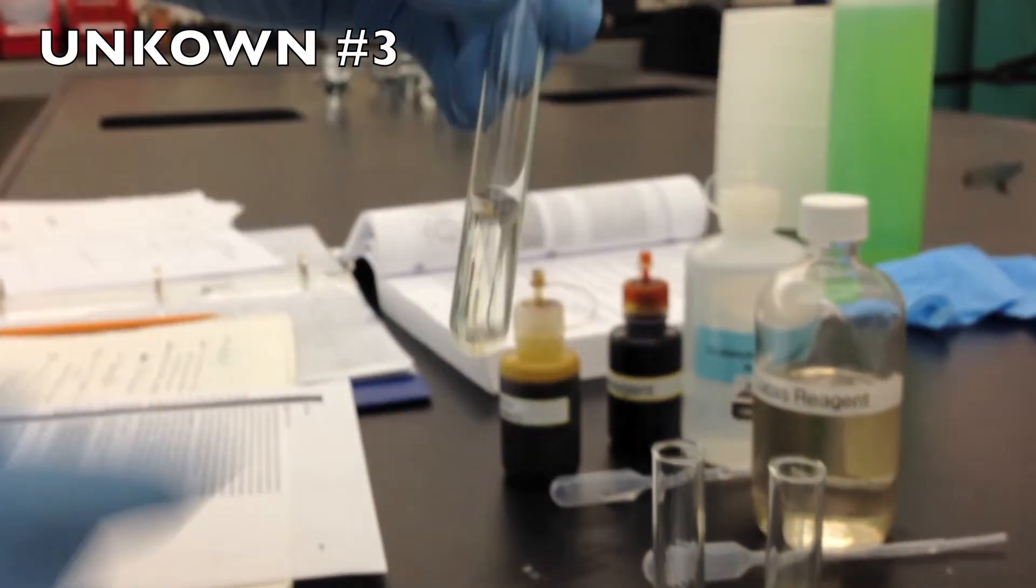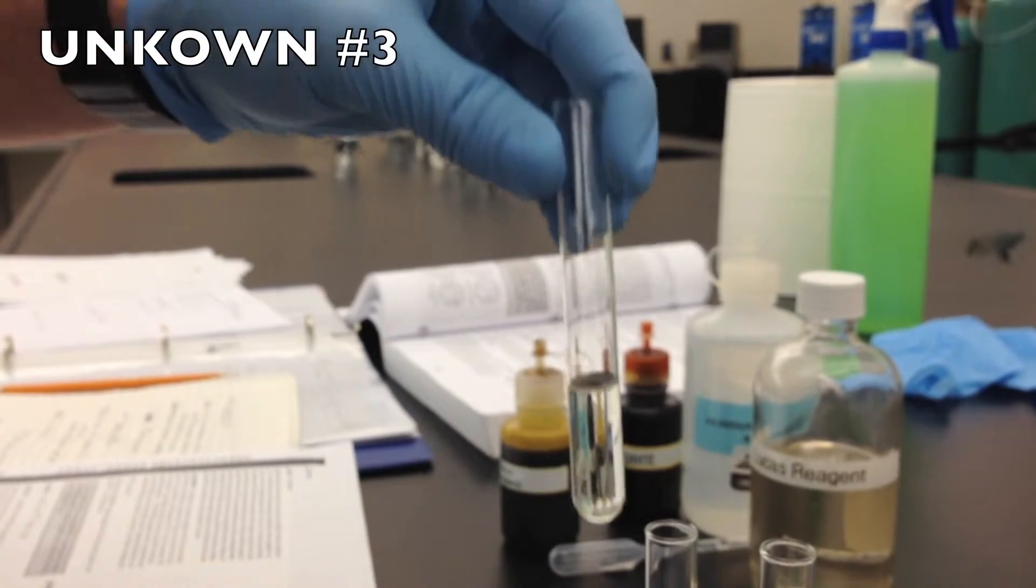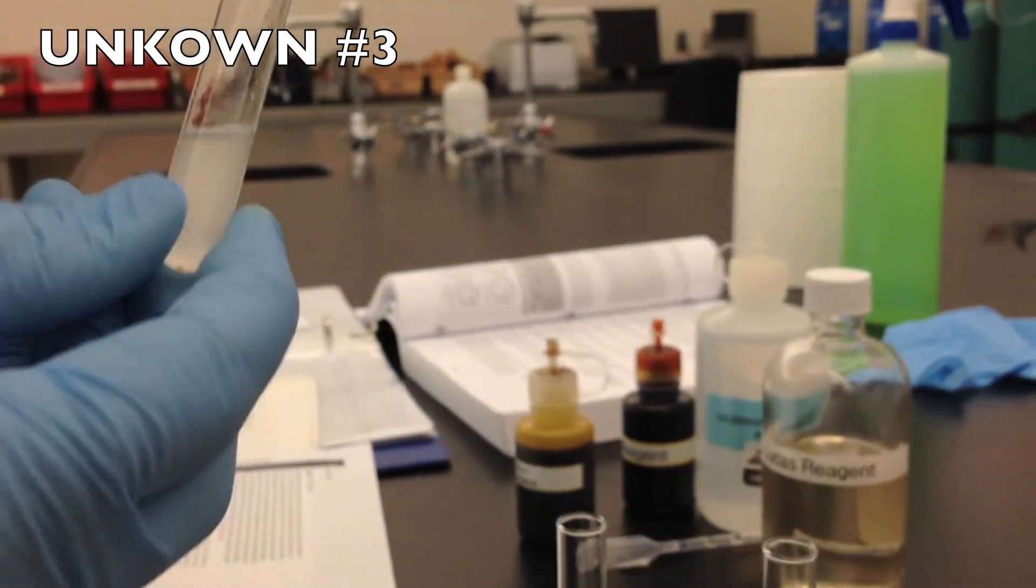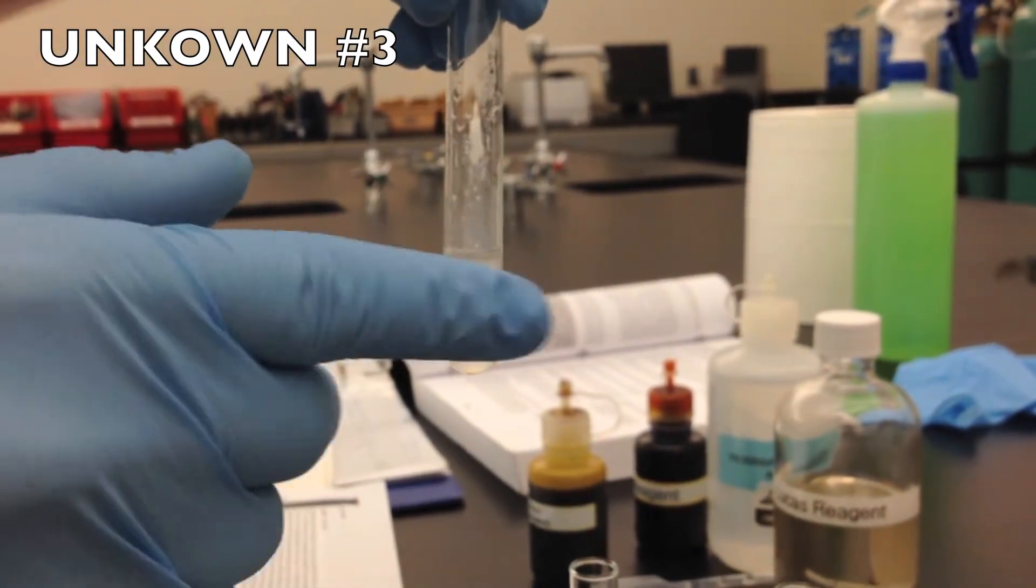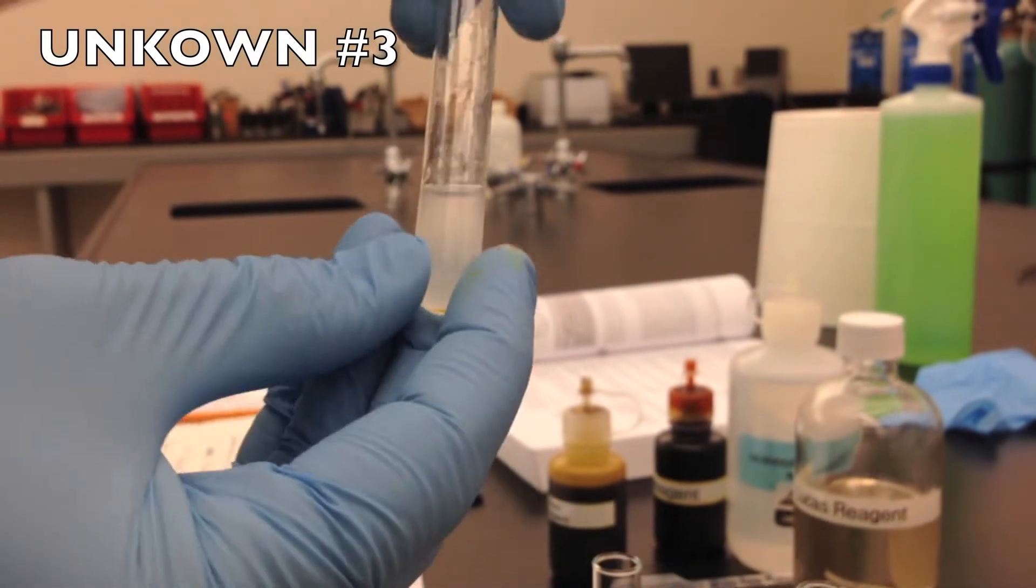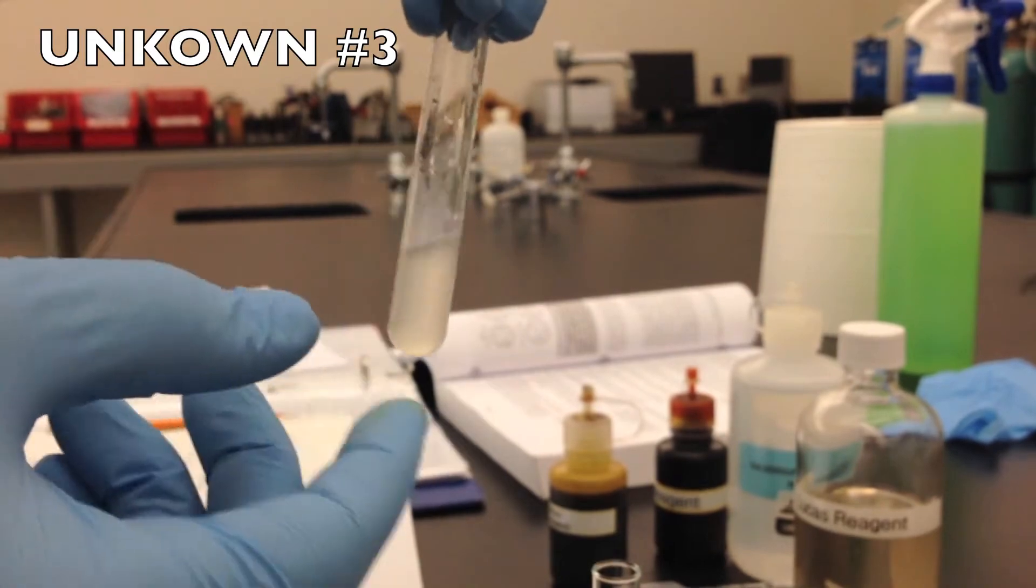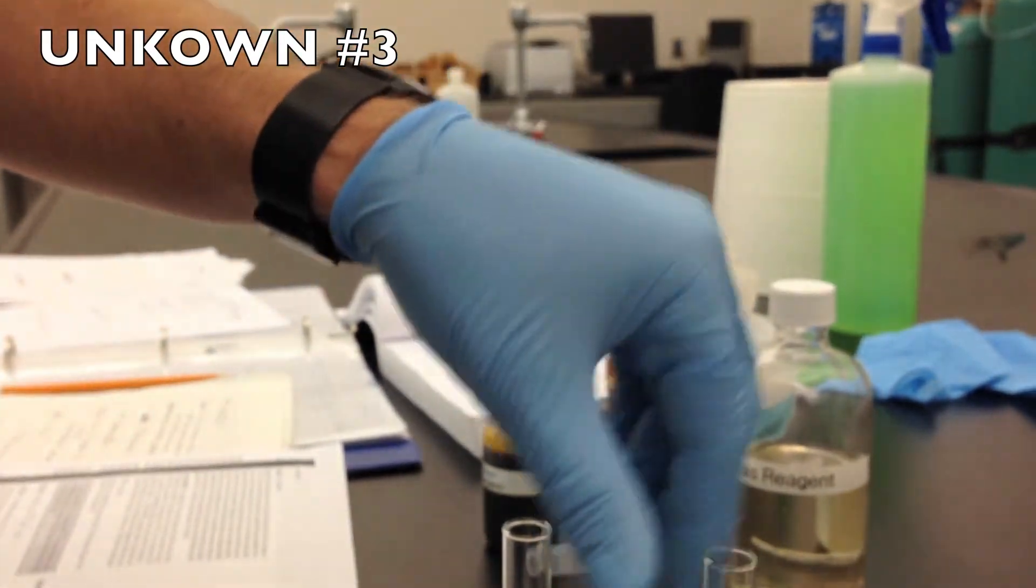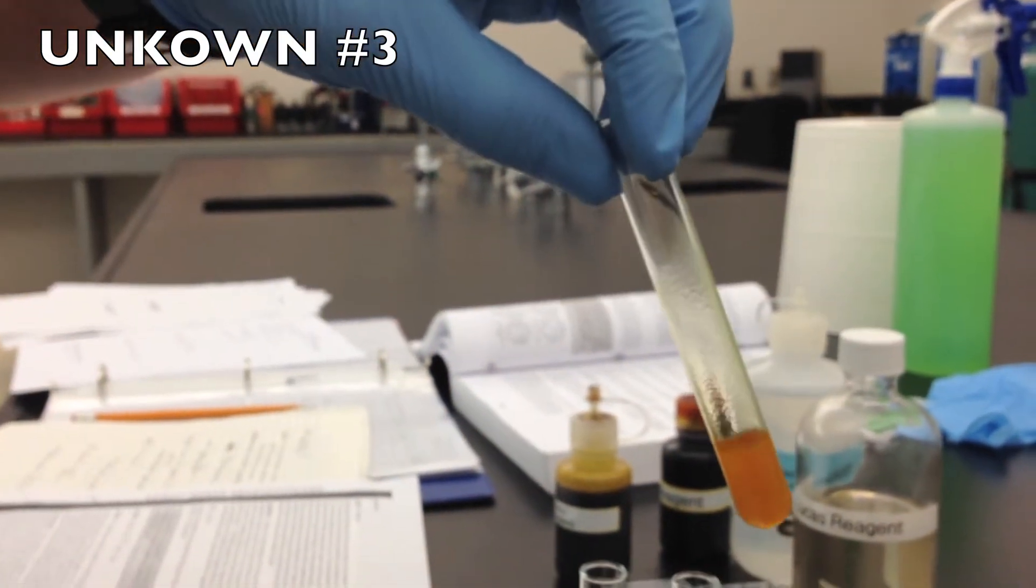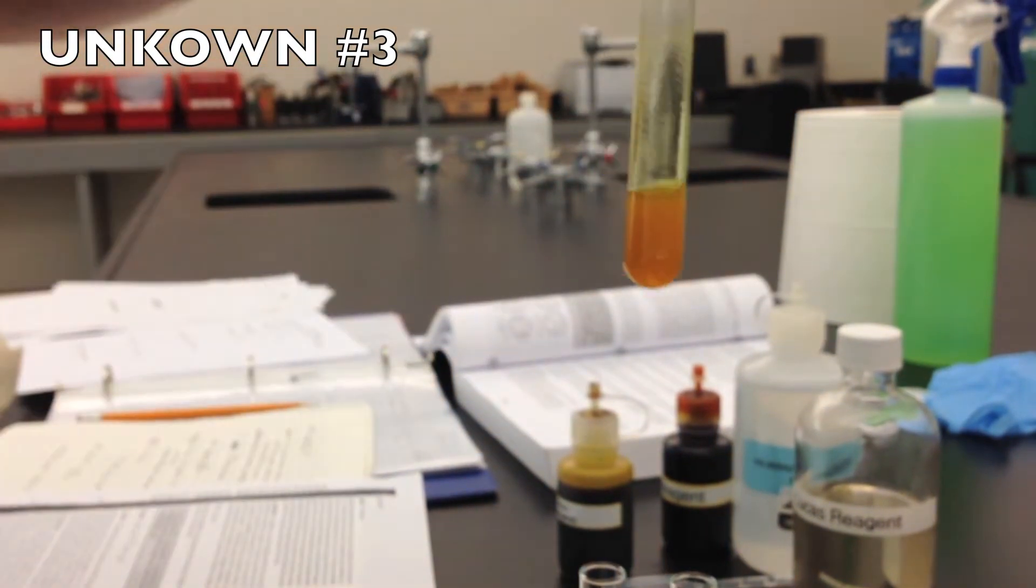Now our third unknown, we had a negative result on the iodoform reagent. So we know it is not a secondary. We got a positive result immediately on the Lucas test. And this is to tell if it is secondary or tertiary. And we had a negative result on the chromic acid test. So we know it is not a primary or secondary.